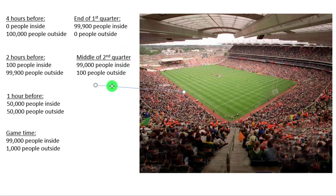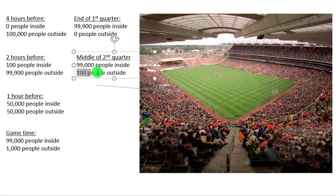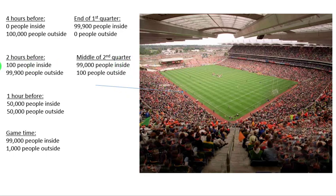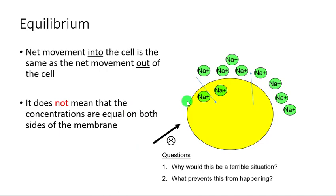Halfway through the second quarter, if you sit at the gates, you'll see some latecomers coming in — stuck in traffic, lunch went late. Let's say in one minute about 100 people move into the stadium. That same minute you'll count about 100 people walking out — babysitter called, mom is in the hospital. So you've got most people on the inside, but about 100 per minute coming in and 100 per minute going out. That right there is equilibrium.